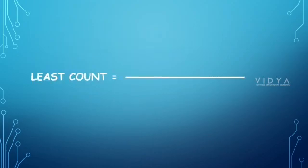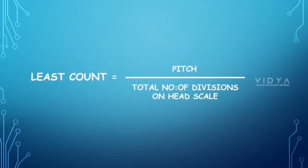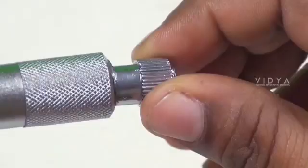So, least count is equal to pitch divided by total number of divisions on head scale, that is 1 by 100 equals 0.01 mm. This is the same wire in the diameter.